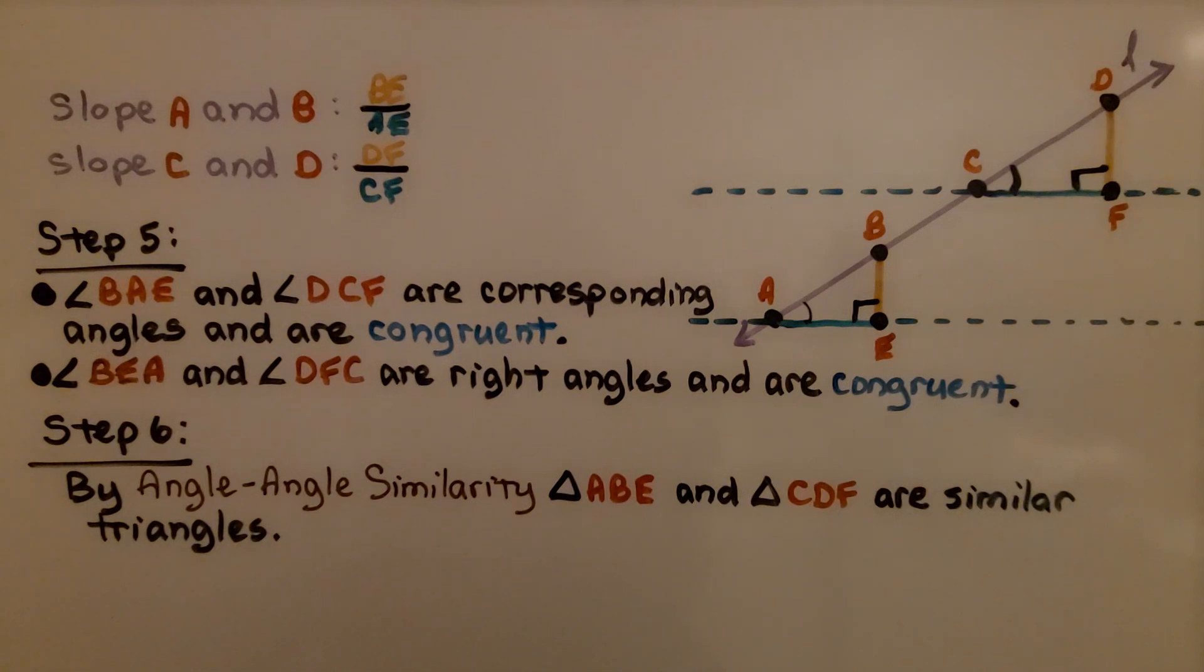Step six, by angle-angle similarity, triangle ABE and triangle CDF are similar triangles.